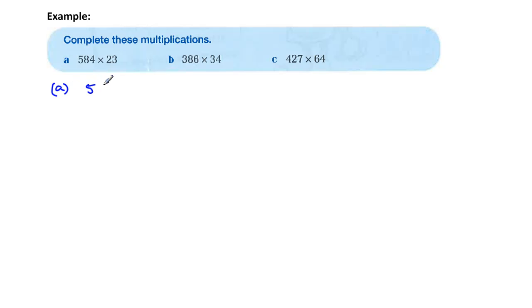Alright, so let's take the first one, 584, and we've got 23 underneath. We're going to multiply them together. You get your ruler, even though I'm not doing it with a ruler, and we go through and multiply it out.